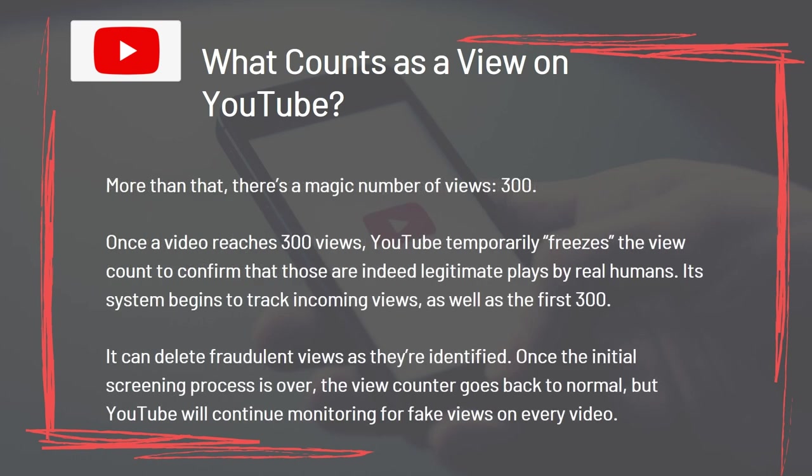There's a magic number of views: 300. Once a video reaches 300 views, YouTube temporarily freezes the view count to confirm those are legitimate plays by real humans. Its system begins to track incoming views as well as the first 300, and can delete fraudulent views as they are identified. Once the initial screening process is over, the view counter goes back to normal, but YouTube will continue monitoring for fake views on every video.